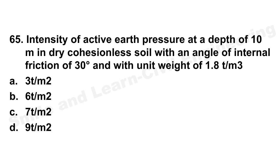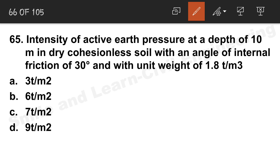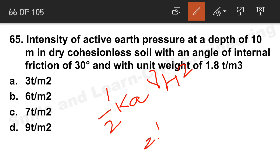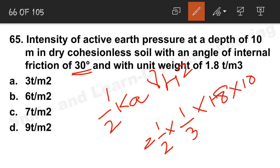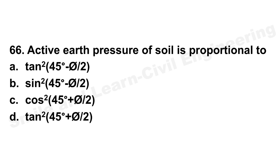Question 64: Sheet piles are primarily used for retaining the sides of cuts. Option C is the correct answer. Question 65: Intensity of active earth pressure at a depth of 10 m in dry cohesionless soil with angle of internal friction 30° and unit weight 1.8 t/m³. Using Pa = ½ × Ka × γ × H² where Ka = (1 − sin30°)/(1 + sin30°) = 1/3, the answer is 3 t/m². Option A is correct.